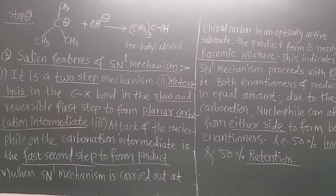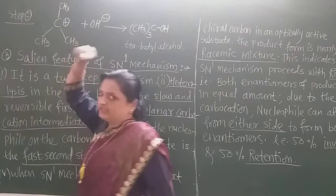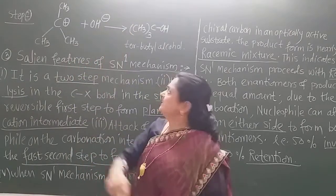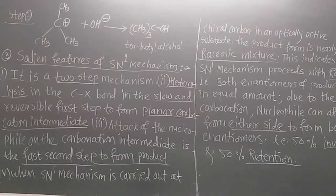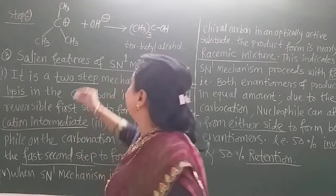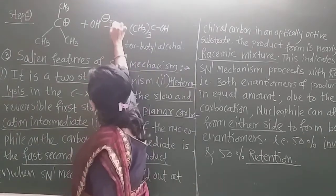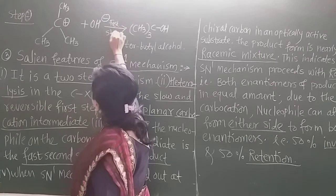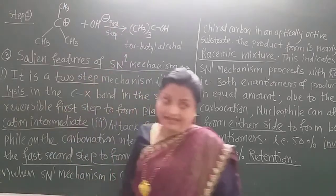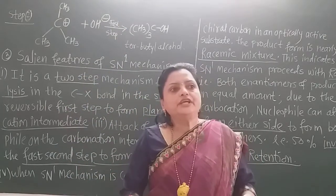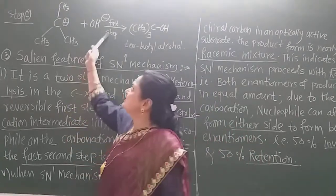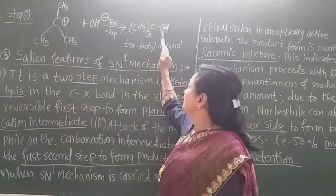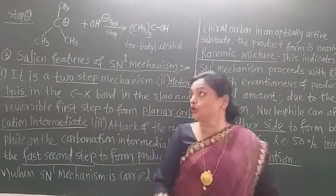In step 1, this is the first reaction — the rate determining step. This first step is not determining the rate on its own; immediately the nucleophile attacks on the carbocation and there is formation of tertiary butyl alcohol.